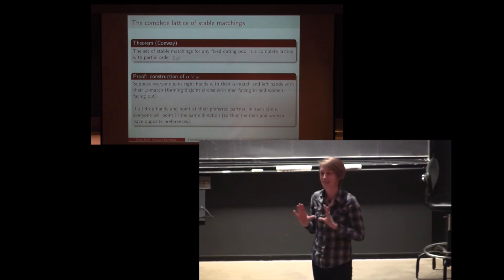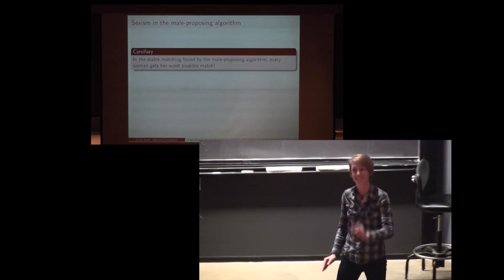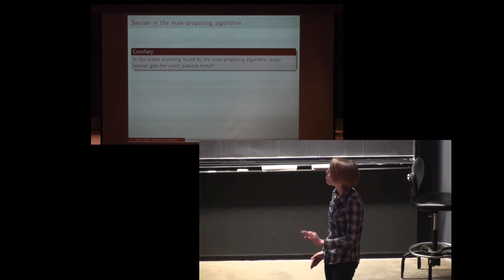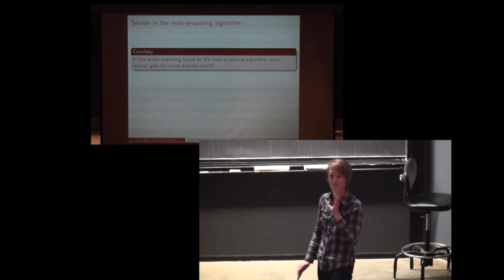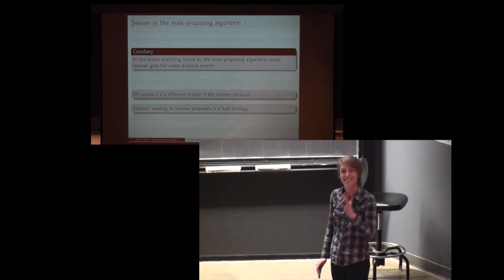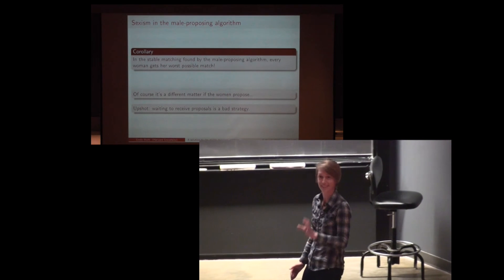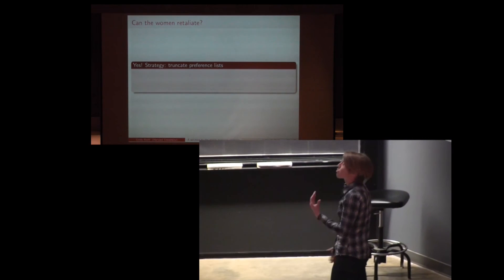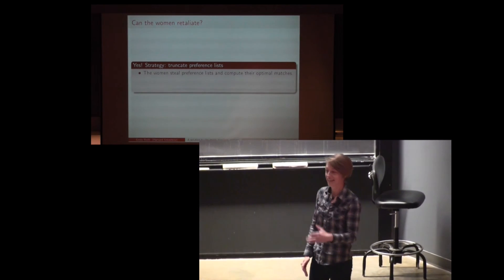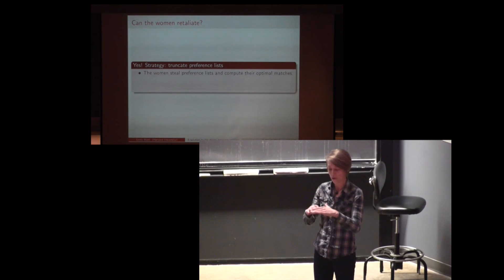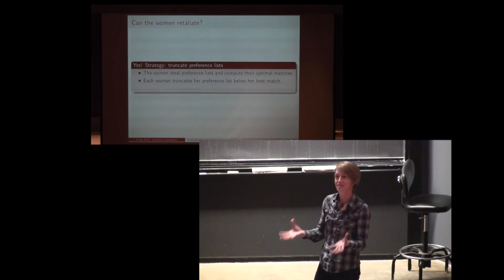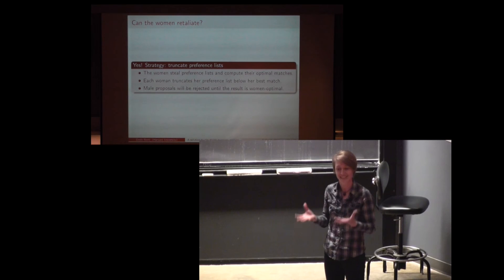The corollary of all this is that the male-proposing algorithm is incredibly sexist — it finds the best possible result for all the men while finding the worst possible result for all the women. The mathematical literature is also sexist: male optimality was in the original 1962 paper, but the simultaneous female suboptimality, which has the exact same proof, wasn't observed until 1976. The women would clearly be better off switching to a women-proposing algorithm, but even if the men act as proposers, women can retaliate. If each woman truncates her preference list right below her best possible match, the suboptimal male proposals will be rejected and you're forced into the female-optimal solution.